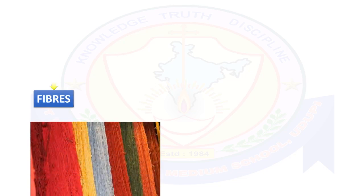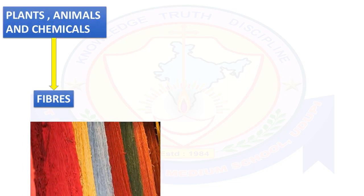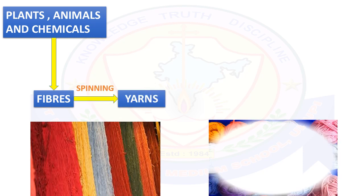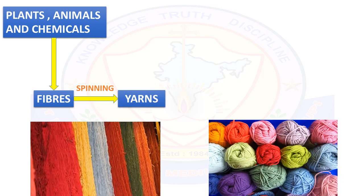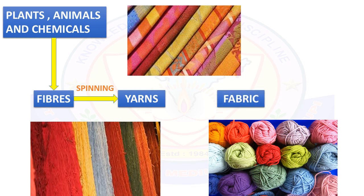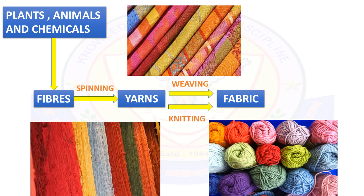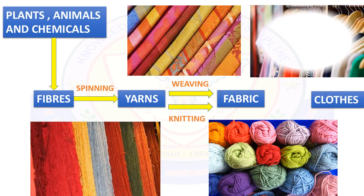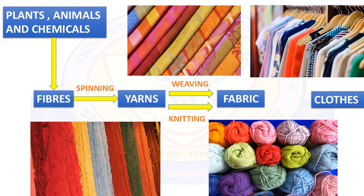Here is a chart which summarizes the entire chapter. Fibers are obtained from plants, animals, and chemicals. After spinning, the fibers are converted into yarns. Yarns are converted into fabric by weaving and knitting. Ultimately, fabrics are converted into clothes by stitching.